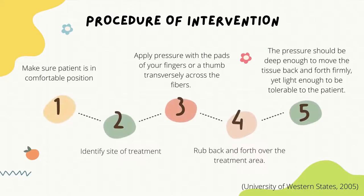For the intervention procedure, first, we need to make sure the patient is in a comfortable position. Next, we need to identify the site of treatment. Then, start with applying pressure with the pads of your fingers or a thumb transversely across the fibers. Continue to rub back and forth over the treatment area. Lastly, the pressure should be deep enough to move the tissue back and forth yet light enough to be tolerable to the patient.